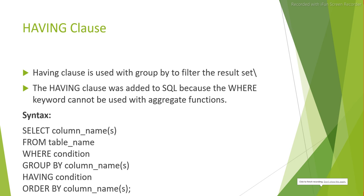Hey guys, welcome or welcome back to ETL QA Labs. My name is Hetu and in this session we will look at the HAVING clause. In the previous session we looked at the GROUP BY clause, and the HAVING clause is really the continuation of the GROUP BY clause. If you want to use the HAVING clause, you always have to use the GROUP BY clause in your query; otherwise the HAVING clause does not have any meaning.